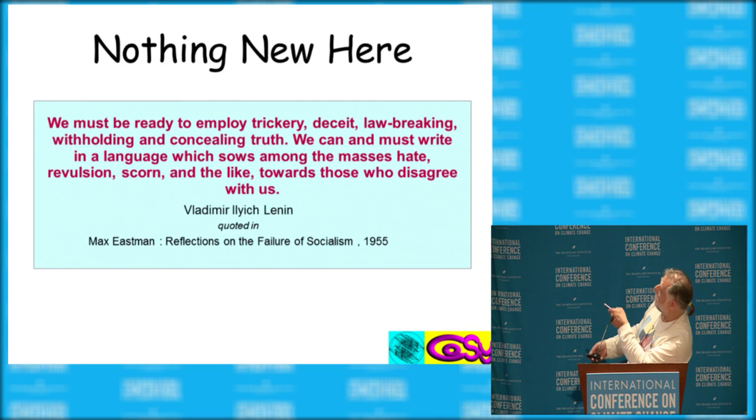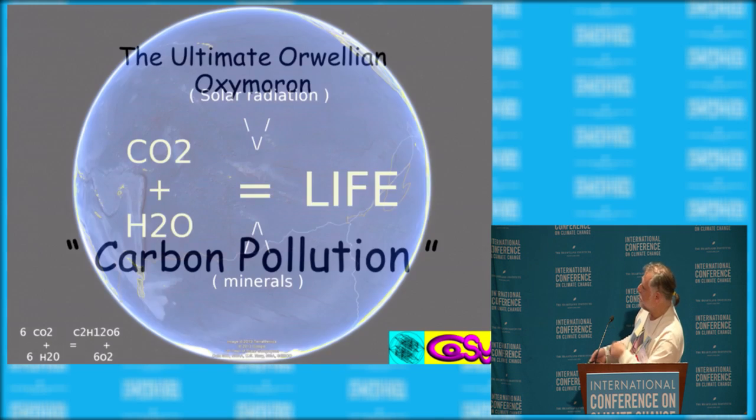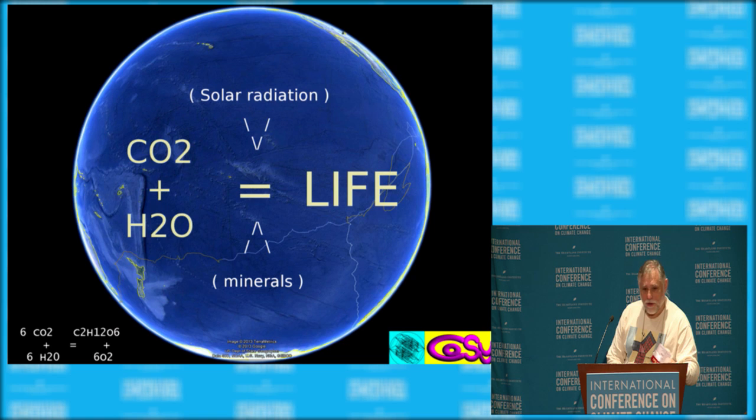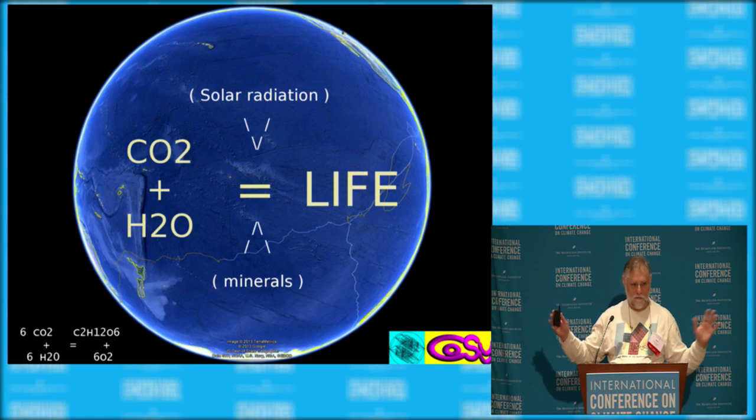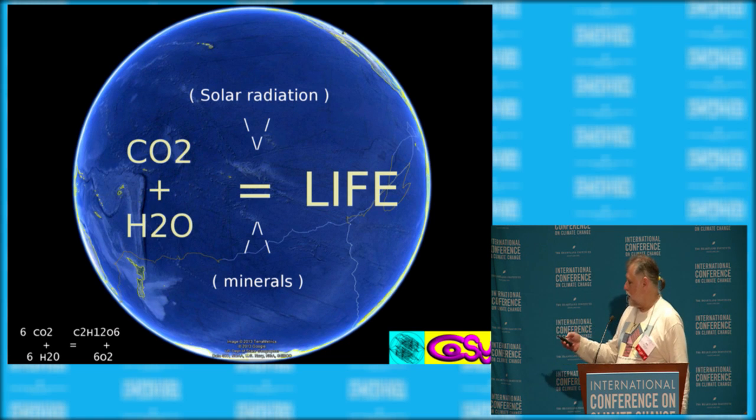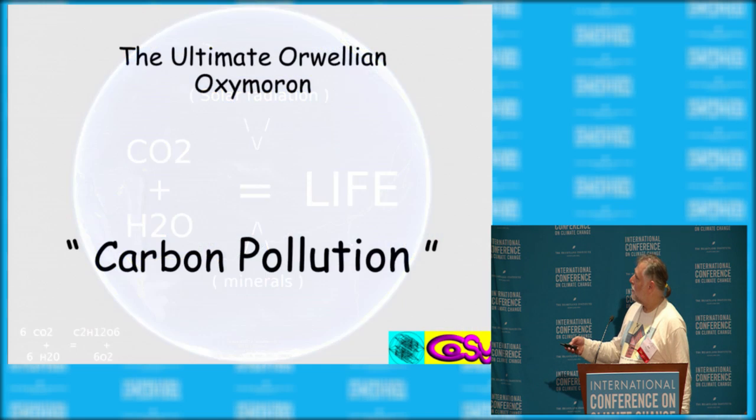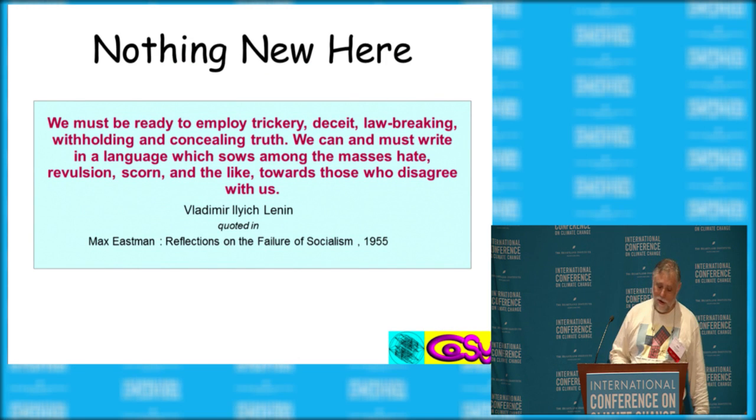It is not possible by an order of magnitude for Venus to be explained as a runaway greenhouse. It is BS. But then again, there are ways to, nothing's new. Thank you.